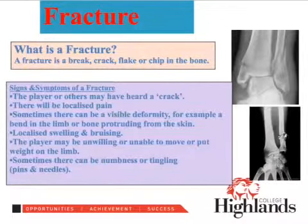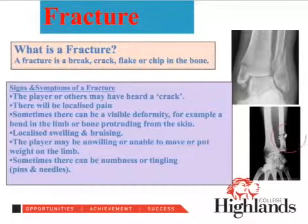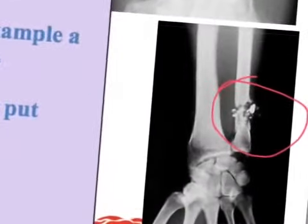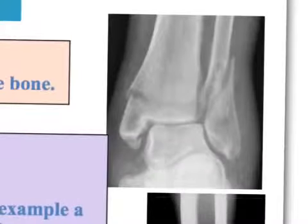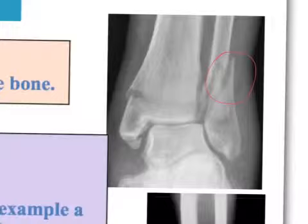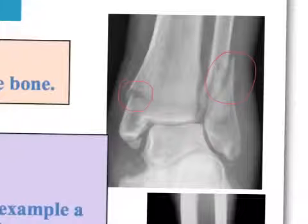We're going to define what a fracture is. A fracture is a break, crack, flake, or chip in the bone. We can see here on our diagram a very obvious break, and if we zoom in, we can see not only a fracture of the bone but it's also chipped away as well — so that's a very severe fracture. In this other image, we have a fracture of the fibula and it looks like there may be one of the tibia as well — a double fracture, not good.